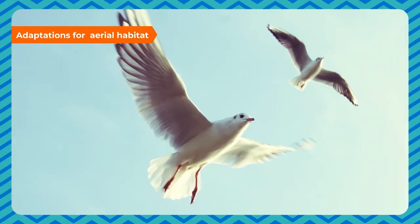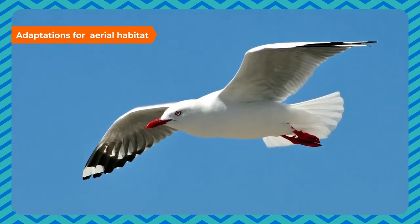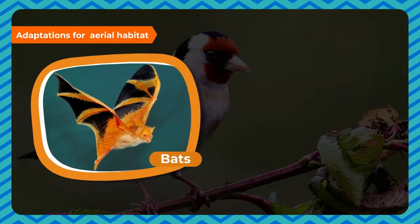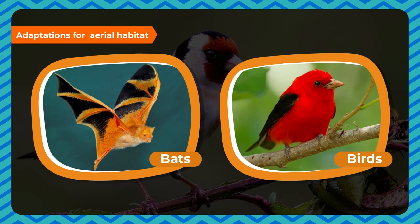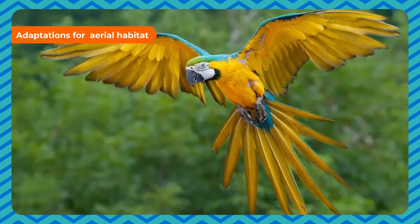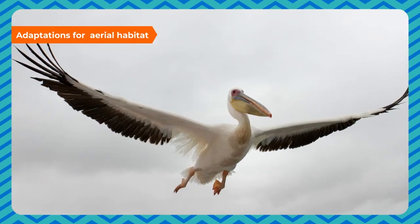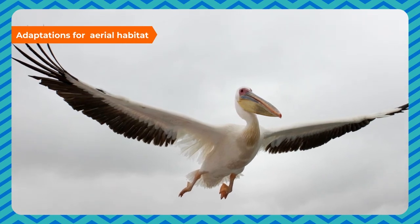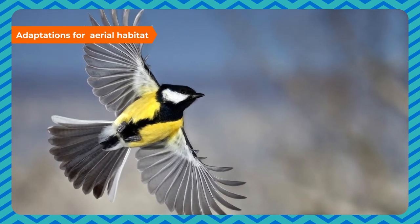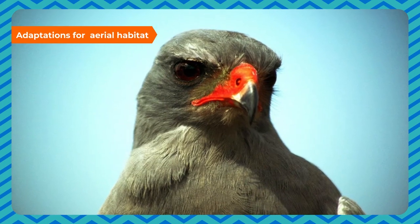Animals adapted for the aerial mode of life are known as aerial animals; common examples are bats and birds. Their adaptations include a streamlined body covered with feathers, forelimbs modified into wings, light hollow and spongy bones with many air cavities, well-developed nervous system and sense organs, well-developed flight muscles, and very sharp eyesight.